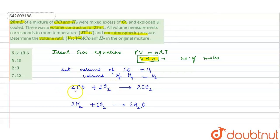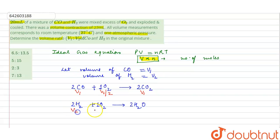Since two moles of carbon monoxide react with one mole of oxygen, if CO volume is V1, it reacts with V1/2 volume of oxygen to form V1 volume of carbon dioxide. Similarly for hydrogen, volume is V2; it reacts with V2/2 oxygen, and two moles of hydrogen form two moles of water so product volume is V2.